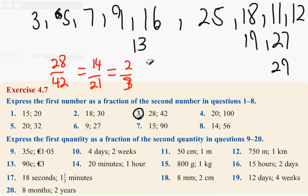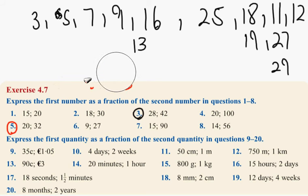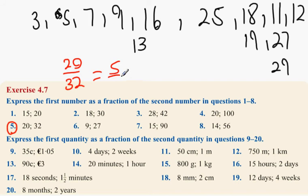Next one is number five. Number five is 20 over 32. Now, what we're going to do here is 20 over 32, both can be divided by four. And when we divide them by four, we get five eighths.